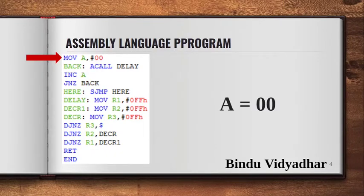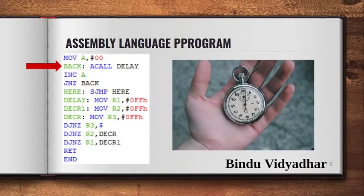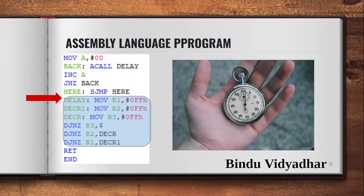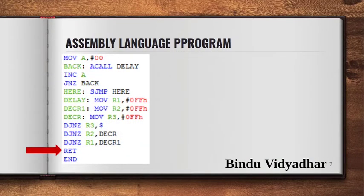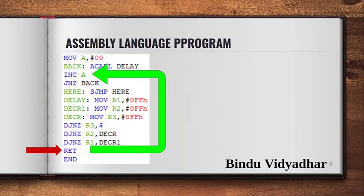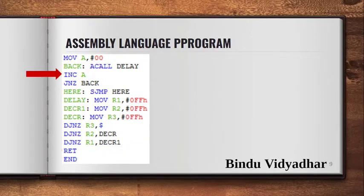The accumulator is first loaded with 0, then we call the delay routine which introduces a delay between counts. The delay routine runs and returns to the instruction after the called position, which is increment A. Since it's an up counter, the counter must be incremented by 1.